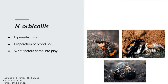A little more background on N. orbicollis: as mentioned, they exhibit biparental care, and the pre-ovipositional care comes in the form of preparation of what is called a brood ball. This brood ball preparation happens when the beetle locates a carrion resource. Once they find the resource, they will remove all the hair, feathers, and fur — anything external on the animal — and place anal and oral secretions on the carcass. This is very important to combat the diverse microbial community existing on the carcass.